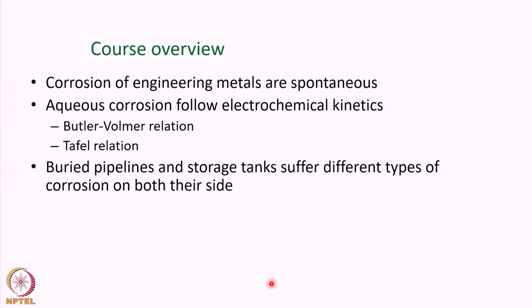Buried pipelines and storage tanks suffer different types of corrosion on both their sides. When exposed to soil, they undergo differential aeration corrosion, microbial corrosion, and even stress corrosion cracking. Within the tank, corrosion depends on the nature of the process fluid being stored. Similarly for pipelines, the nature of the process fluid determines internal corrosion.